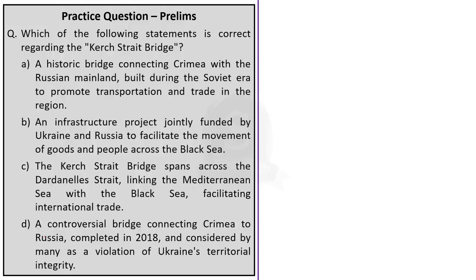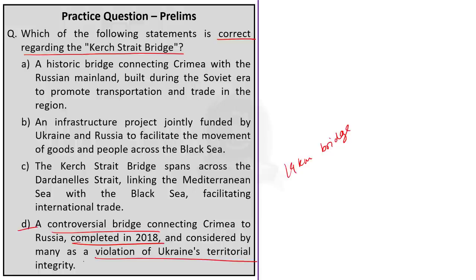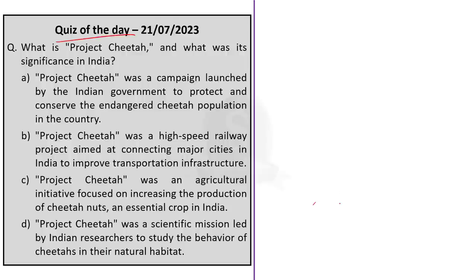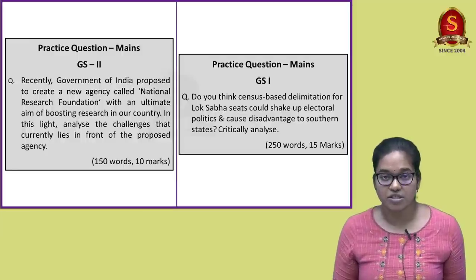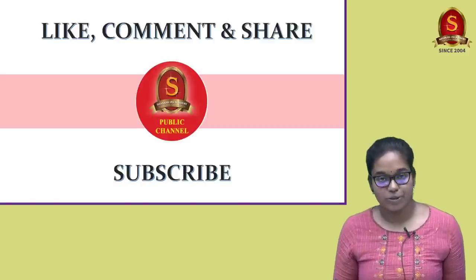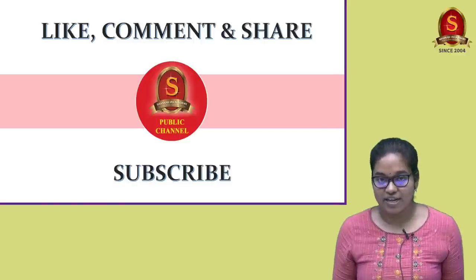Question 3 on the Kerch Strait Bridge: The correct answer is option D. The Kerch Bridge is a 19 km road-rail bridge between the Kerch Peninsula in Ukraine and Russia's Taman Peninsula. Construction began in 2016 and was completed in 2018. It is considered controversial by many as a violation of Ukraine's territorial integrity. Aspirants can write answers to the main questions in the comment section. If you found the video useful, hit the like button, share it, and subscribe to the channel. Happy learning!